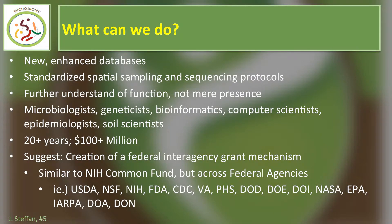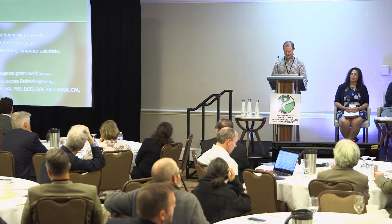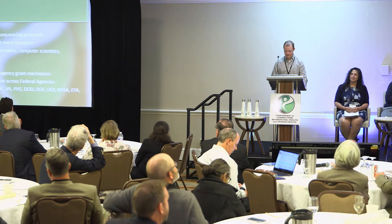This could involve — just going through the acronyms — the U.S. Department of Agriculture, National Science Foundation, National Institutes of Health, Food and Drug Administration, Centers for Disease Control, the Veterans Administration, Public Health Service, the Department of Defense with its huge research budget, Department of Energy, Department of the Interior, NASA, the Environmental Protection Agency, the Intelligence Advanced Research Projects Activity which has a huge bioinformatics core, and even the Department of Army and the Department of Navy. As well as private and philanthropic organizations.